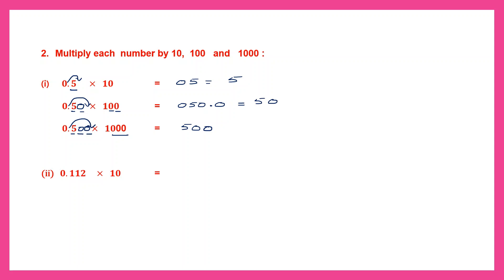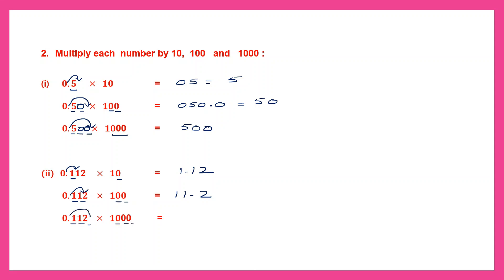0.112 into 10: one zero, point moves one place to the right, coming here — it becomes 1.12. Multiply by 100: two zeros, point moves two places to the right — it becomes 11.2. Then multiply by 1000: three zeros, point moves three places to the right — it becomes 112.